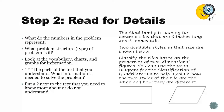The Abad family is looking for ceramic tiles that are six inches long and three inches tall. Two available styles in that size are shown below. Classify the tiles based on the properties of two-dimensional figures. You can use the Venn diagram for the classification of quadrilaterals to help. Explain how the two styles of the tile are the same and how they are different.